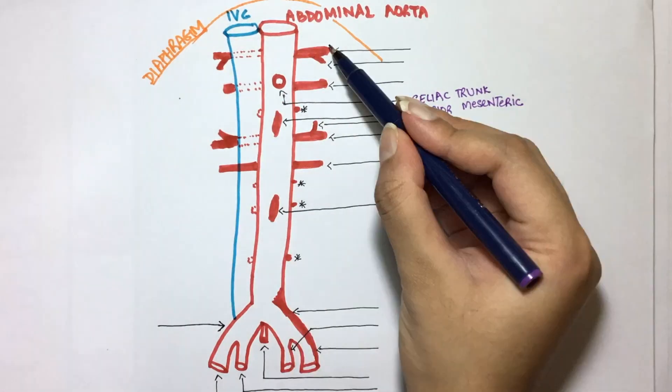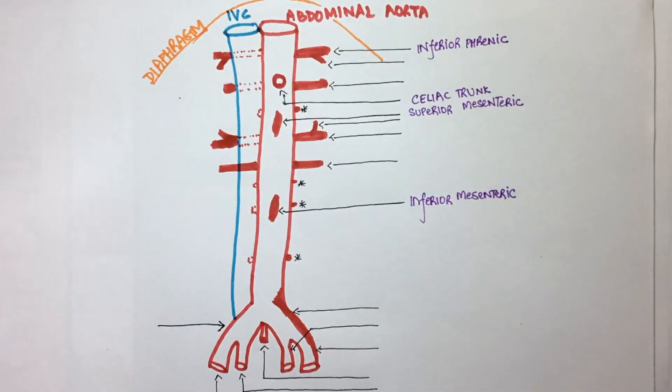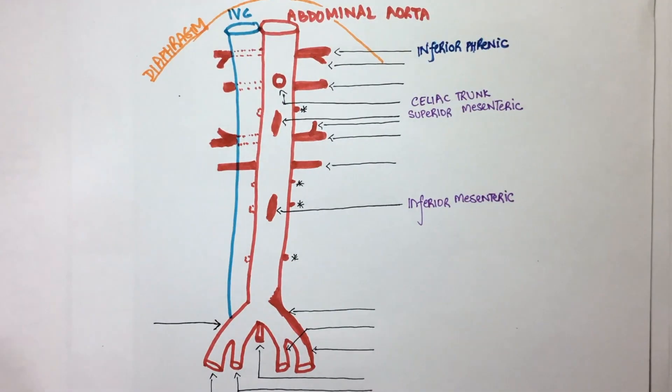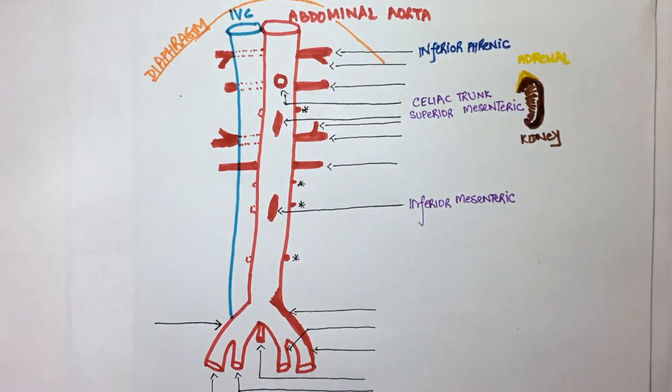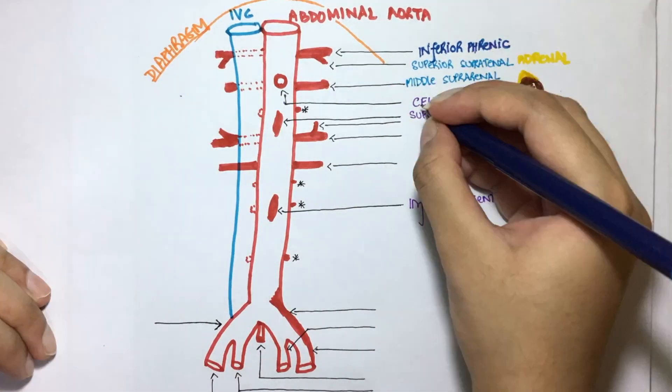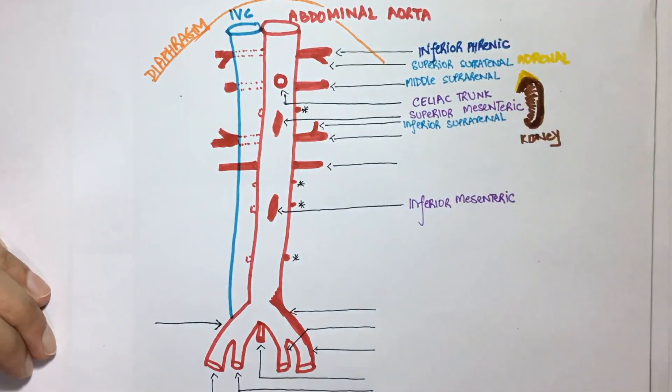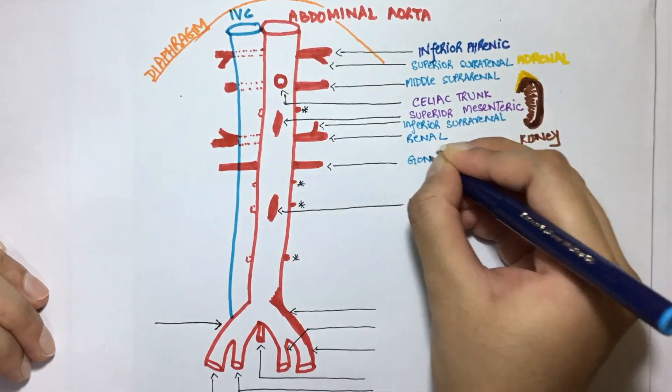This is the diaphragm, so the artery right below it will be the inferior phrenic artery. The adrenals are located above the kidney. This is why the arteries they receive blood from are called the suprarenal arteries. This is the renal artery, and this is the gonadal artery.